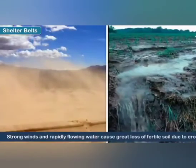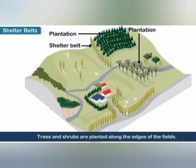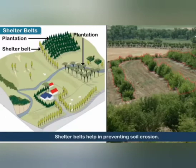Next, the soil conservation method of shelter belts. Strong winds and rapidly flowing water cause great loss of fertile soil due to erosion. Trees and shrubs are planted along the edges of the fields as shelter belts, which help in preventing soil erosion.